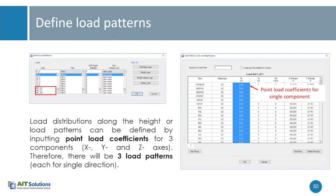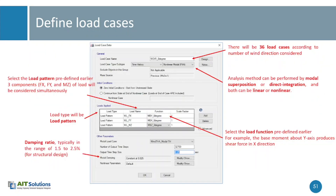Then you define the load patterns. In load patterns you select the wind load type and go to user loads, where you provide all the point load coefficients — one for x, one for y, and one for z — and make one pattern. This is performed three times, defining three load patterns each for single direction. These load patterns will then be multiplied by the base history when you make the load cases in ETABS.